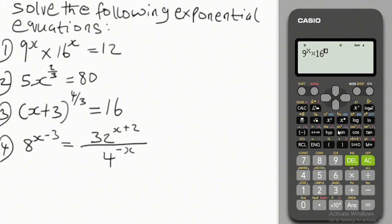So we have 9 to the power of x, times 16 to the power of x. So that's it guys, press equals to. 12. So we are correct guys.